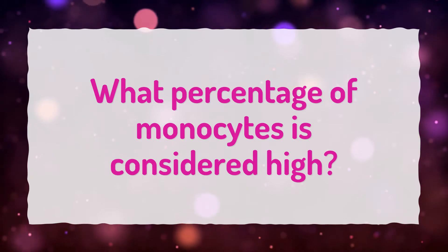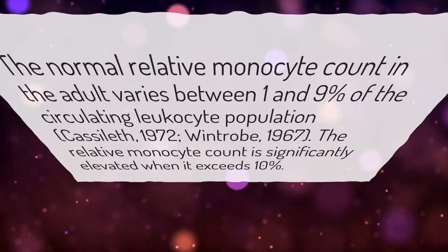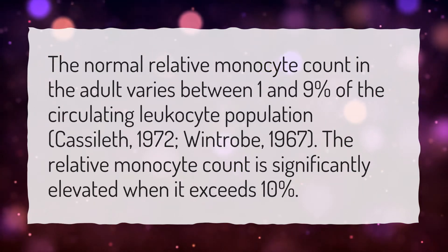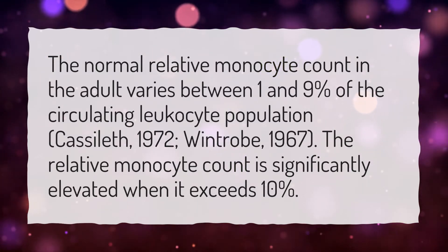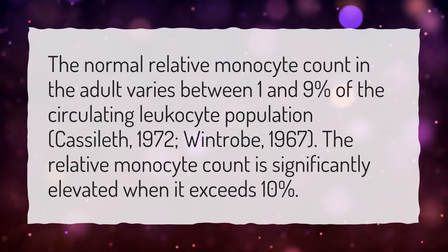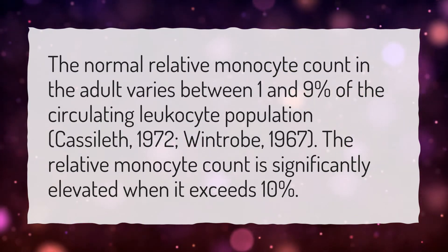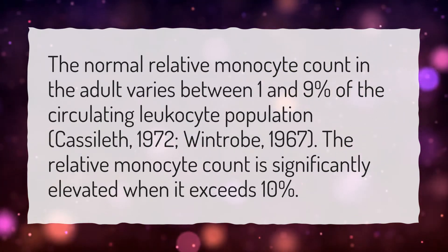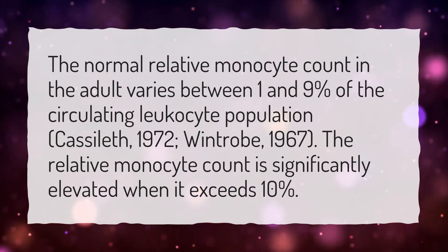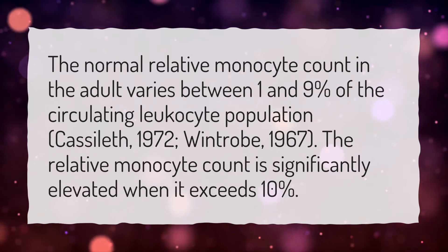What percentage of monocytes is considered high? The normal relative monocyte count in the adult varies between 1 and 9% of the circulating leukocyte population — Cassolith, 1972; Wintrobe, 1967. The relative monocyte count is significantly elevated when it exceeds 10%.